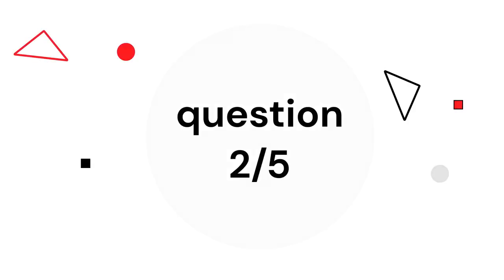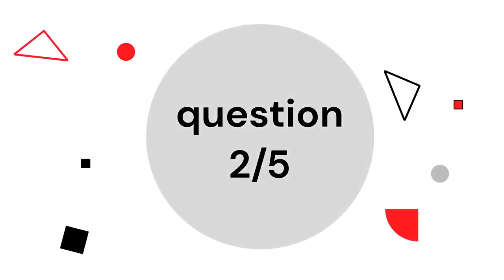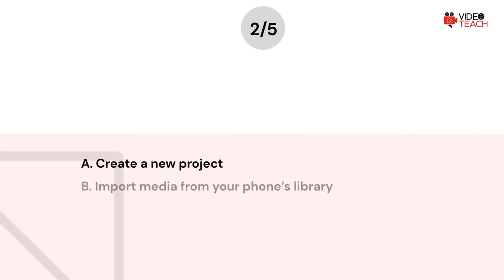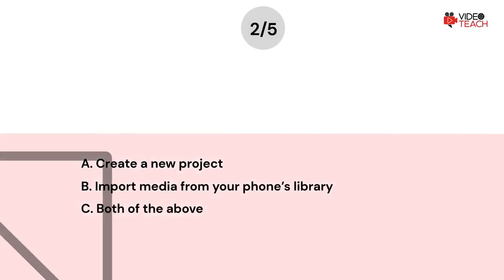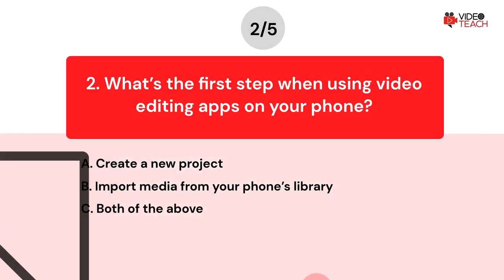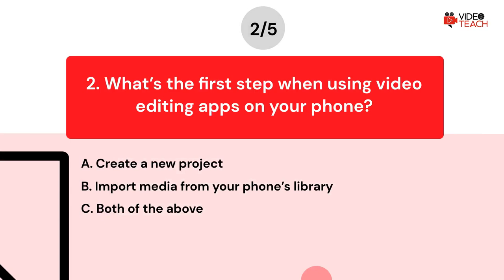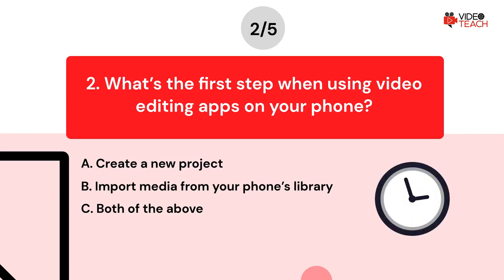Question number two. What's the first step when using video editing apps on your phone? Option A: Create a new project. Option B: Import media from your phone's library. Option C: Both of the above. Now you have about 15 seconds to think about your answer.